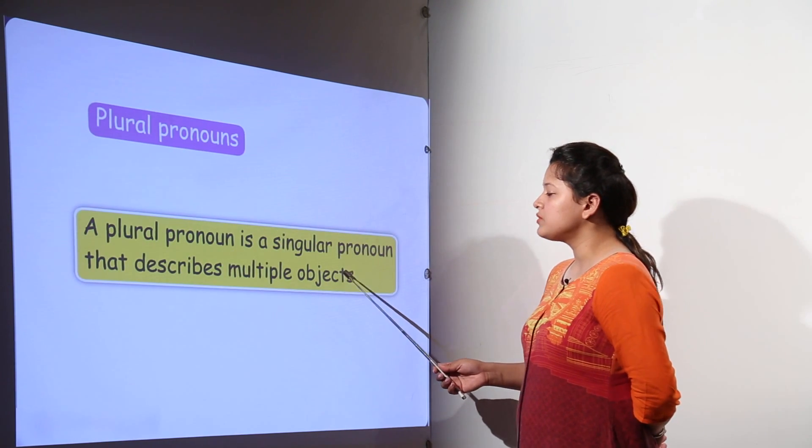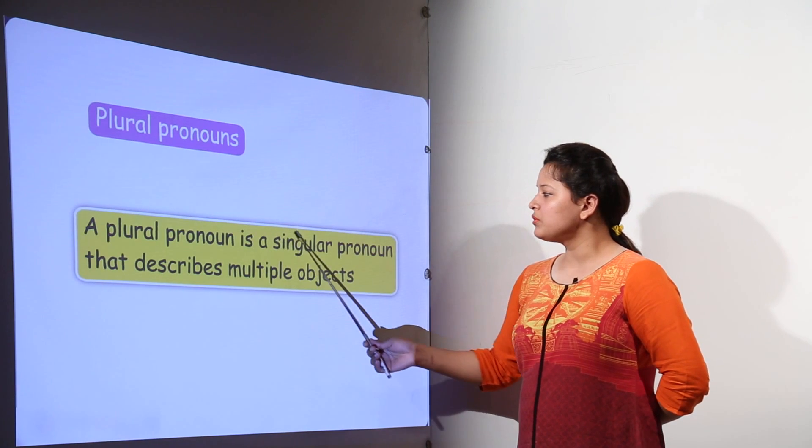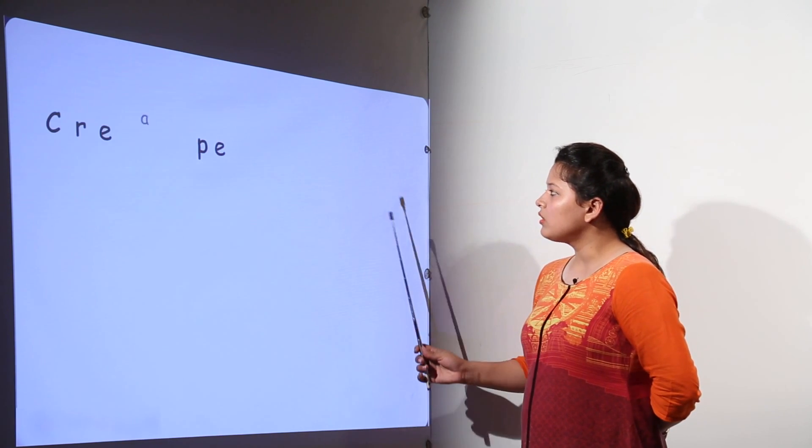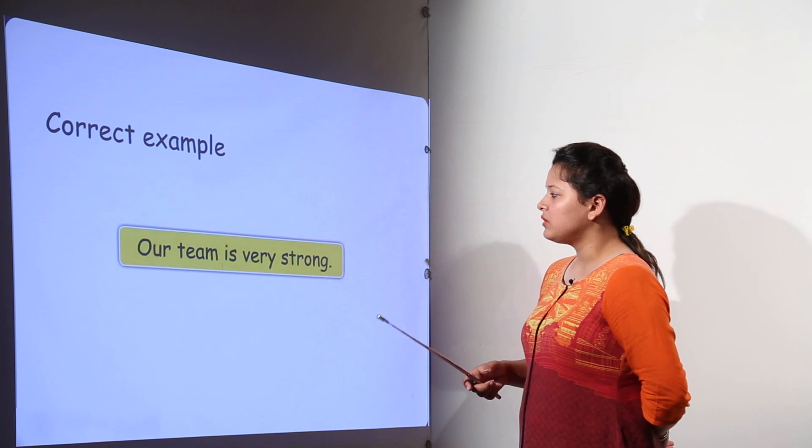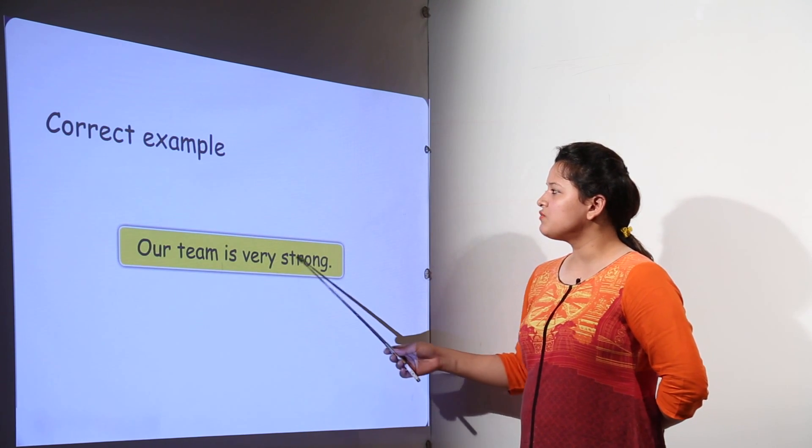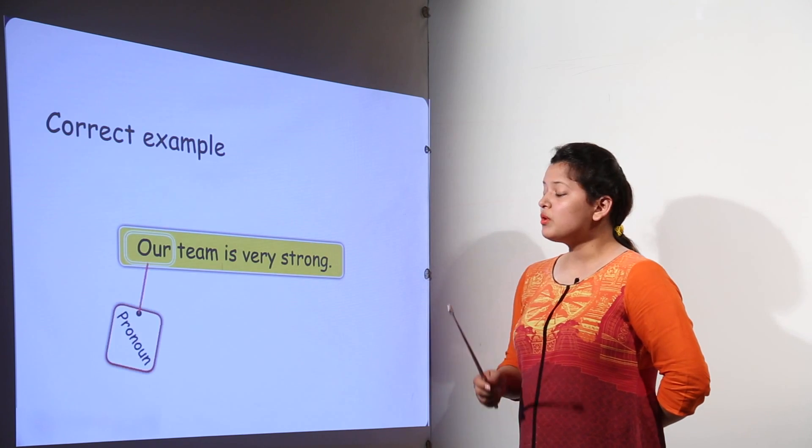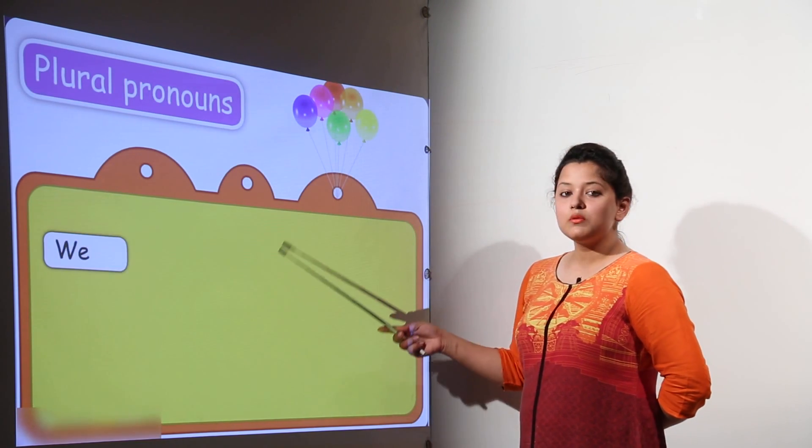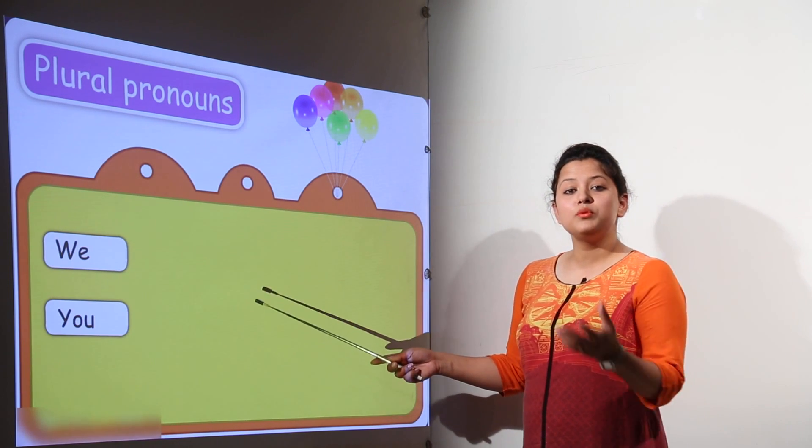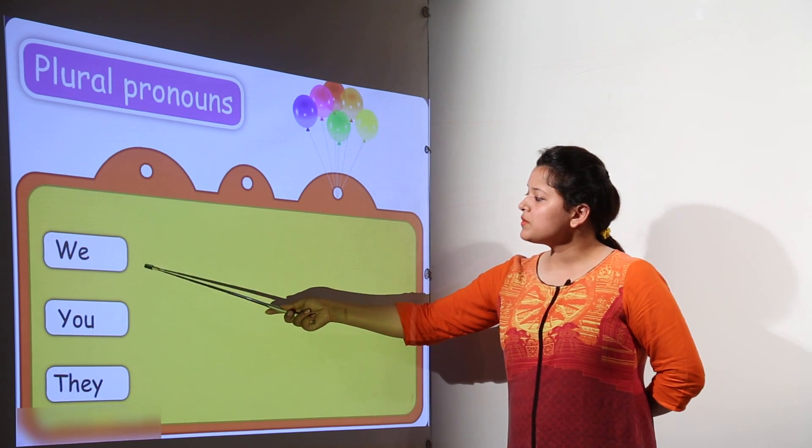Then we can have the plural pronouns as well. These are the plural pronouns which are always used at the places where the noun is plural. Like, our team is very strong. So, our over here is a plural pronoun. Plural pronouns are basically for the plural nouns.